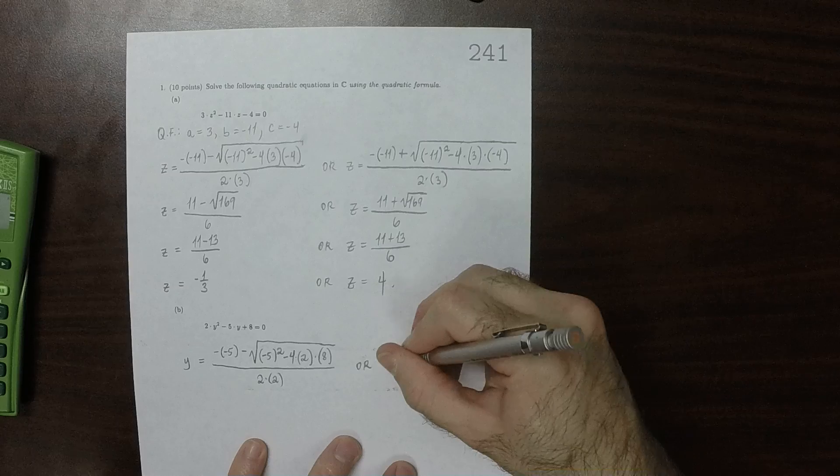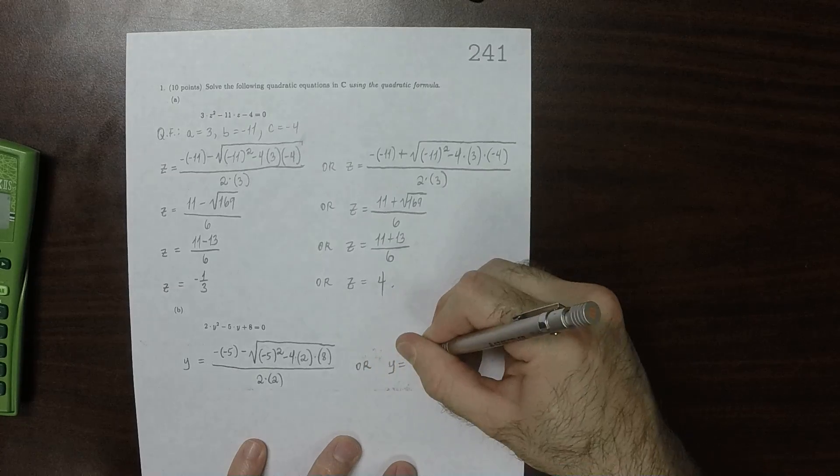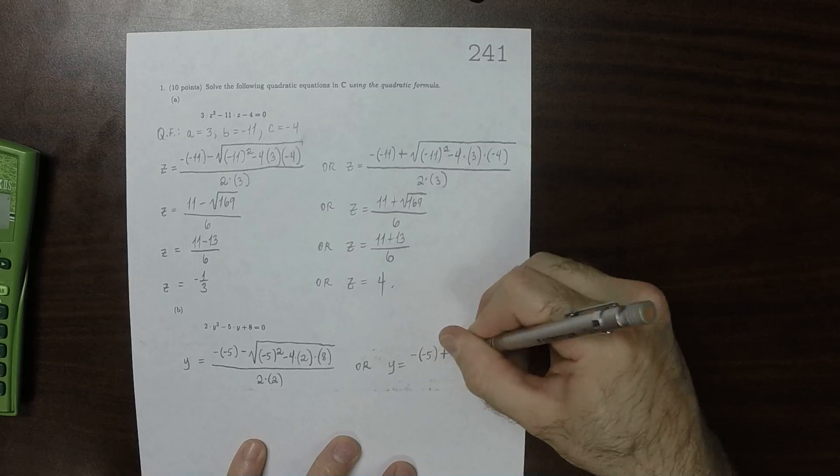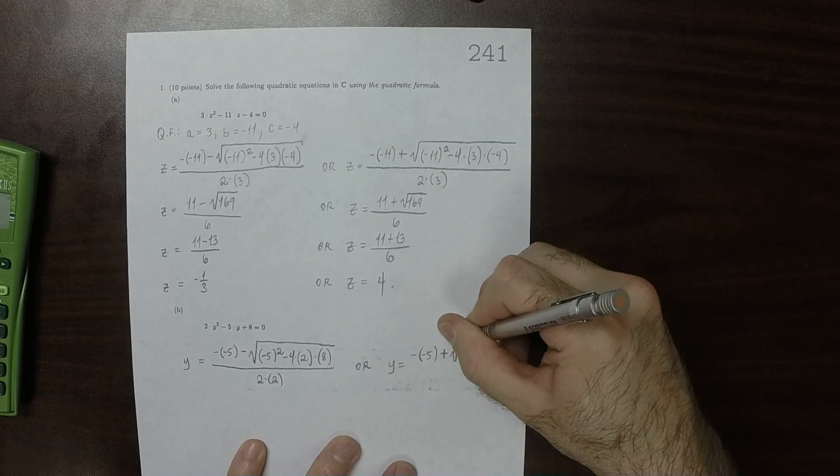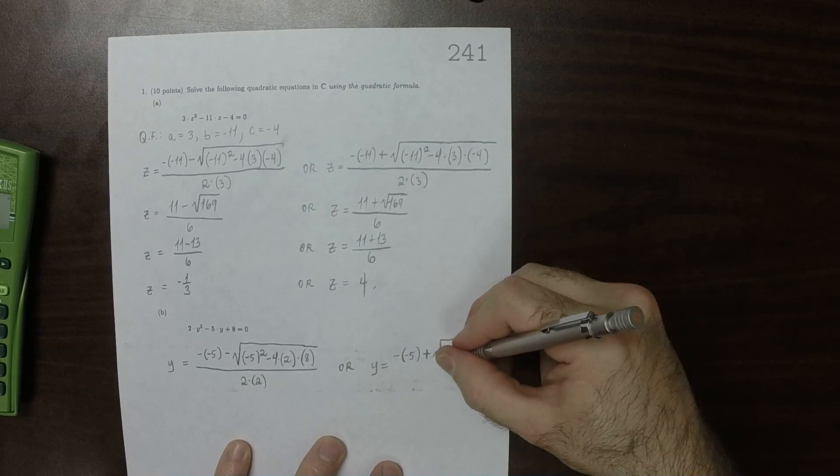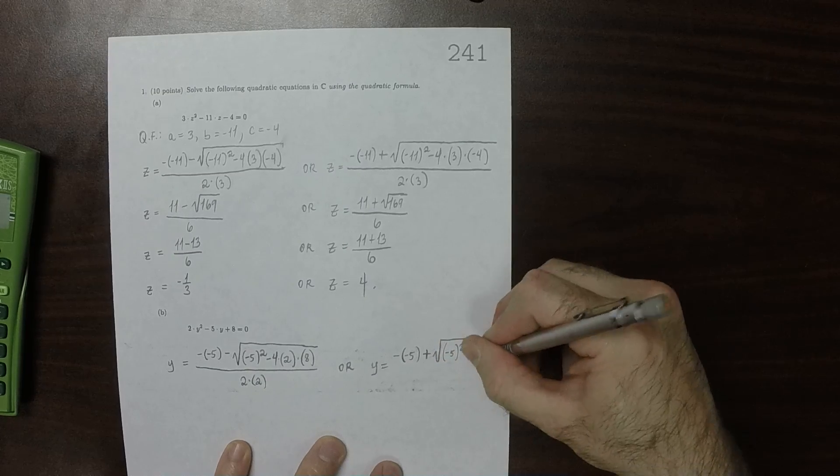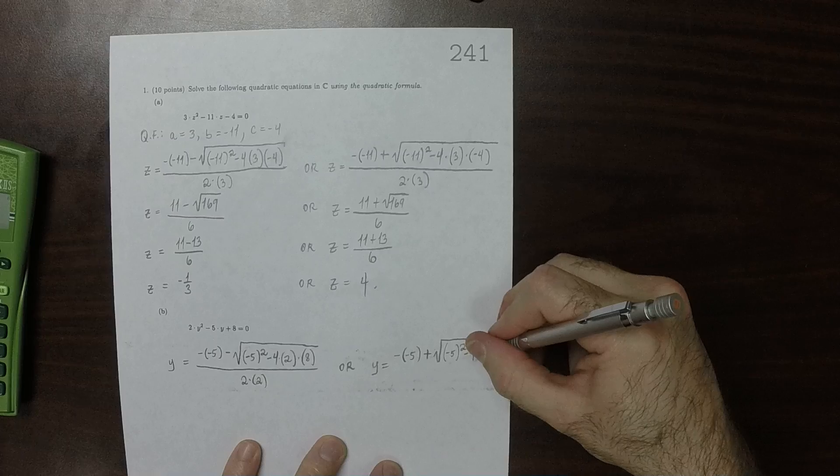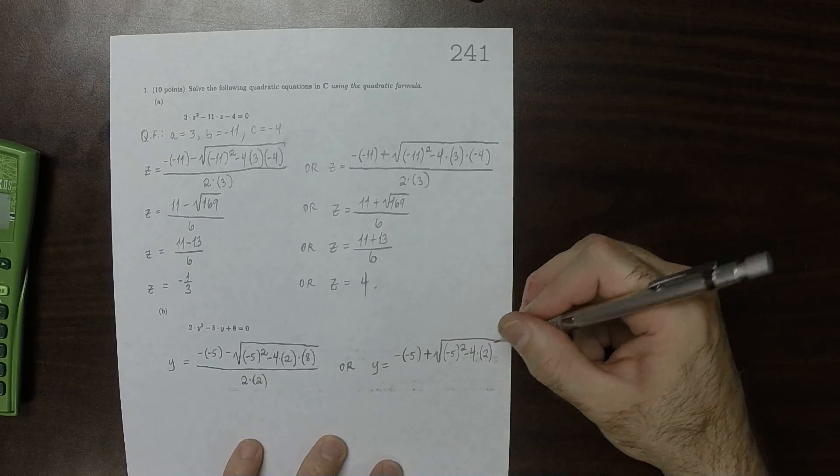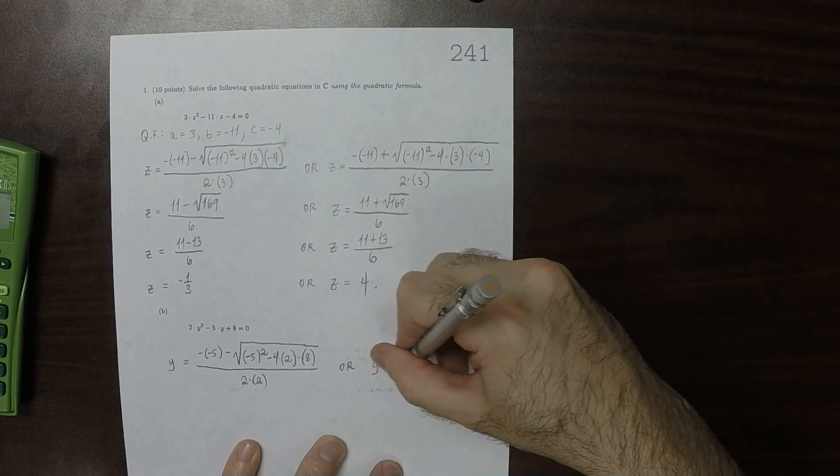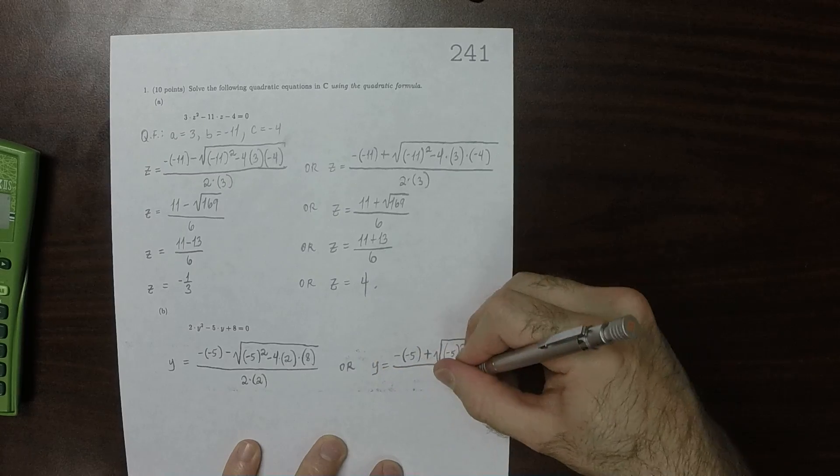The other possibility is that y is negative b plus the discriminant. That would be b squared minus 4 times 2 times 8 over 2 times 2.